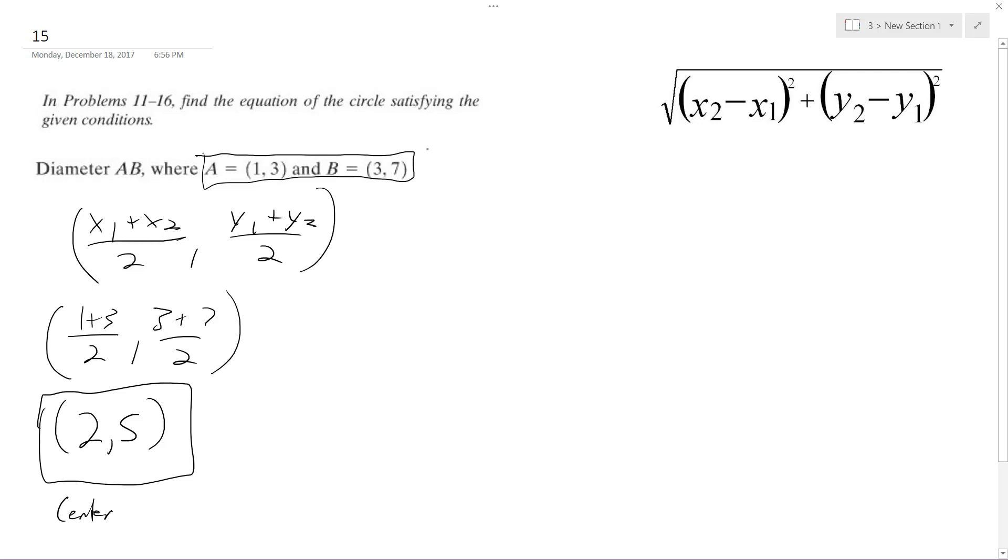So what I'm going to do, just label these x1, y1, x2, y2. I'm going to have square root of 3 minus 1 squared plus 7 minus 3 squared. So I end up with 2 squared plus 4 squared, which is 4 plus 16, which is square root of 20.